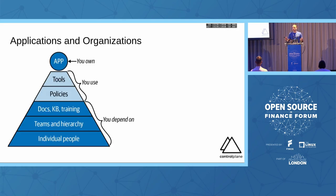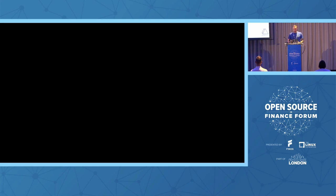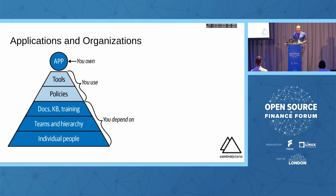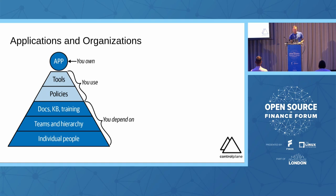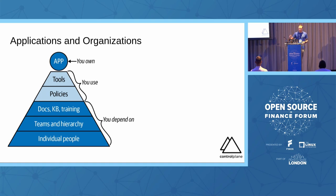Within our organization, we want to threat model everything from an application's perspective. A developer only owns the application itself; the supporting tools are provided and managed by teams. The ultimate model of Kubernetes service integration is to have individual teams behave as managed service provider analogs, similar to the cloud model. This segregates responsibility, retains uptime, and sets clear interfaces between teams. Tools and policies are provided by operations and security respectively, while documentation, runbooks, knowledge bases, training, and team hierarchies are all potential points of compromise.